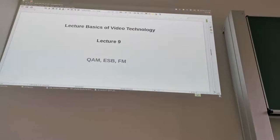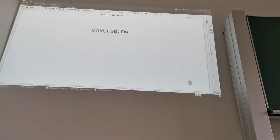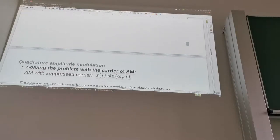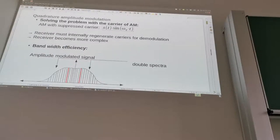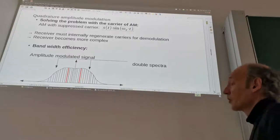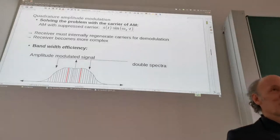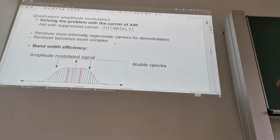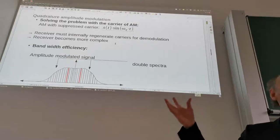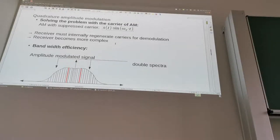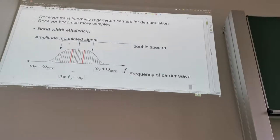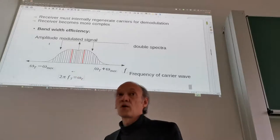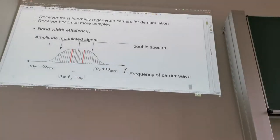How can we solve the remaining problems of amplitude modulation? For instance, the carrier is not really necessary for information transmission but costs a lot of power for the transmitters. Or the double sideband is still inefficient for the bandwidth. In the AM formulation, AM with carrier has this (1 + s) — the carrier came from that 1. We could just omit the 1 and then we just have s times sine, which basically removes our carrier. This leads us to further modulation types: double sideband modulation without carrier, single sideband, and frequency modulation.